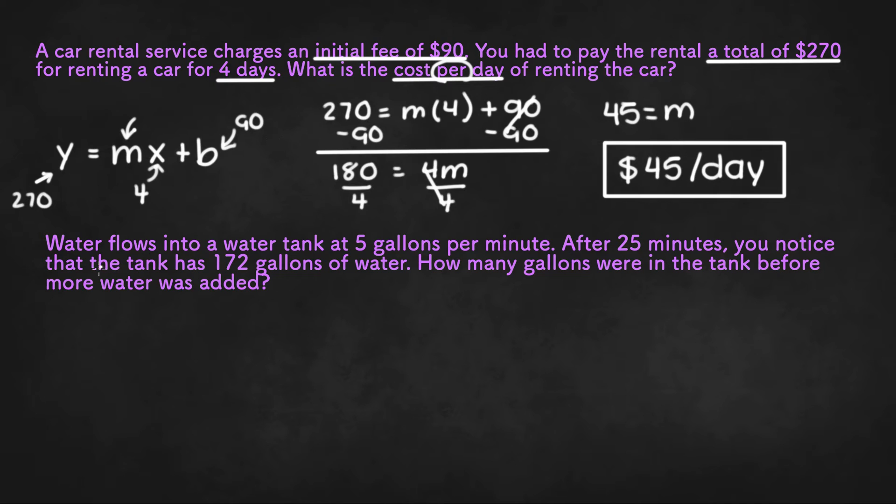Now the next example says water flows into a water tank at 5 gallons per minute. After 25 minutes, you notice that the tank has 172 gallons of water. How many gallons were in the tank before more water was added?